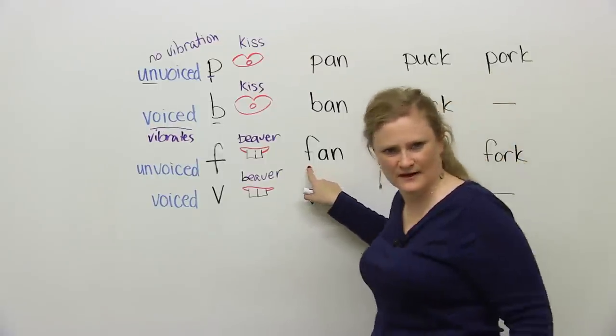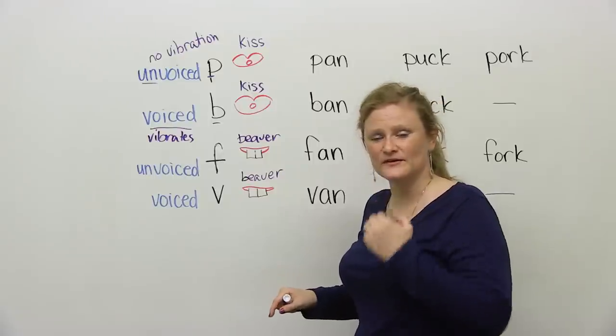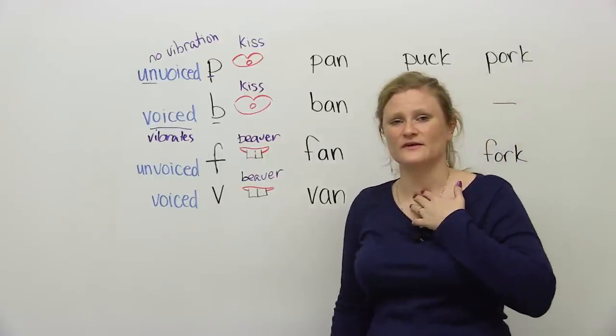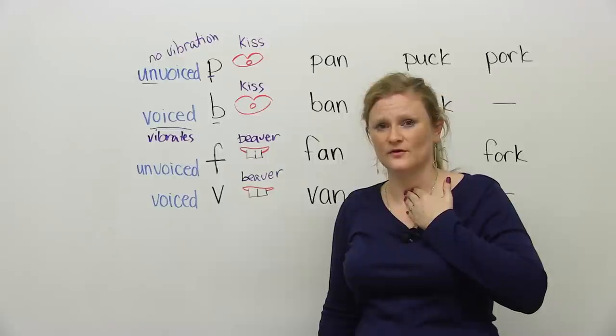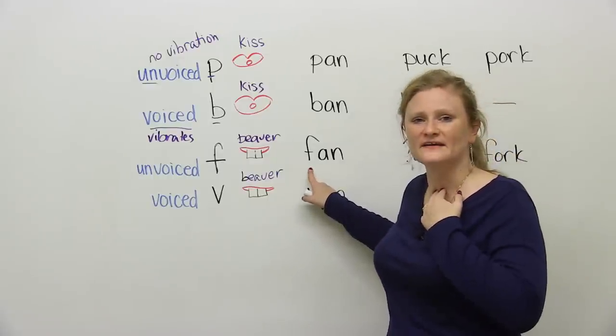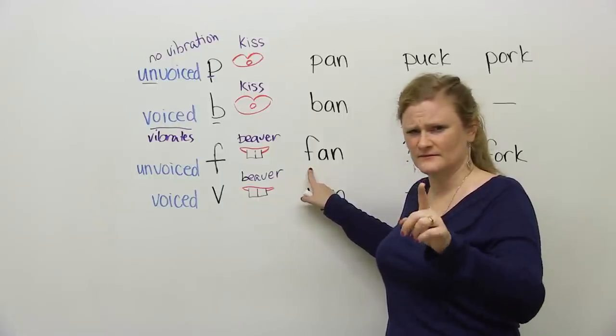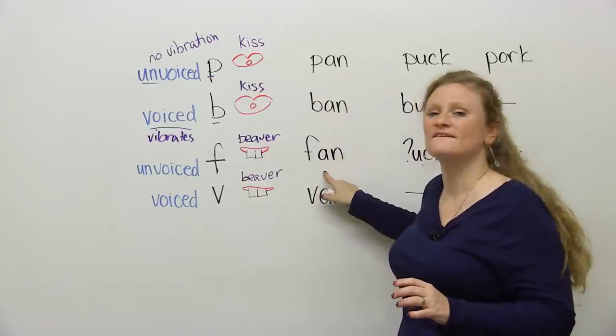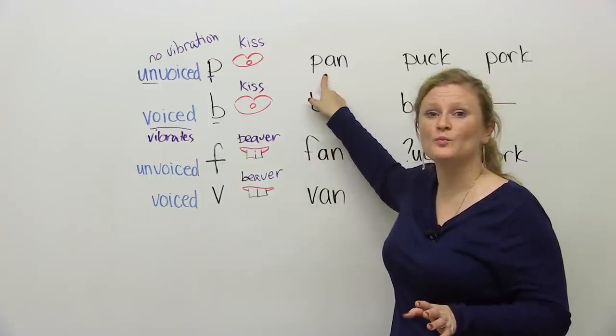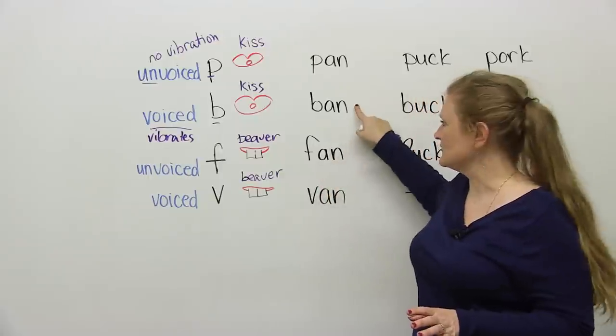Then we have the F word, fan. So you're going to want to stick your teeth out and blow the air down and say fan. Again, with the voiced sound, you're going to want to stick your teeth out, but you're going to vibrate your vocal cords and say van. Try these two together. Fan, van, fan. Try this one: pan, fan. Kiss mouth: pan. Beaver teeth: fan. Pan, fan.